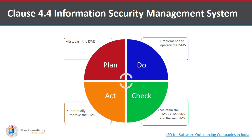The last sub-clause: information security management system. Here we follow the PDCA cycle — plan, do, check, and act. In the planning phase, we establish the ISMS. In the do phase, we implement and operate the ISMS that was established. In the check phase, we monitor and review the ISMS for improvements. And in the act phase, once the improvements are finalized, we continually improve the ISMS to make it better.